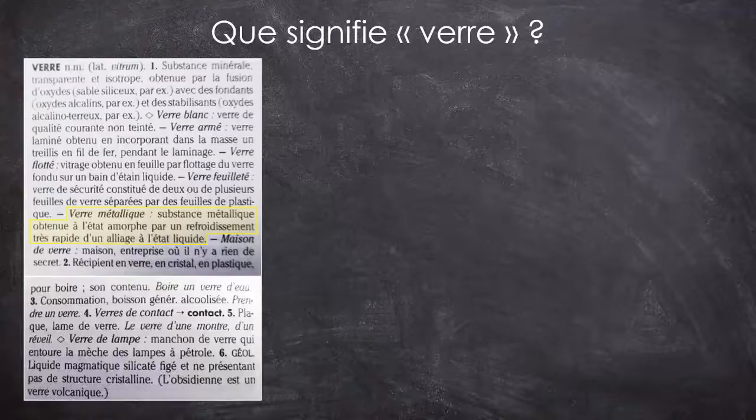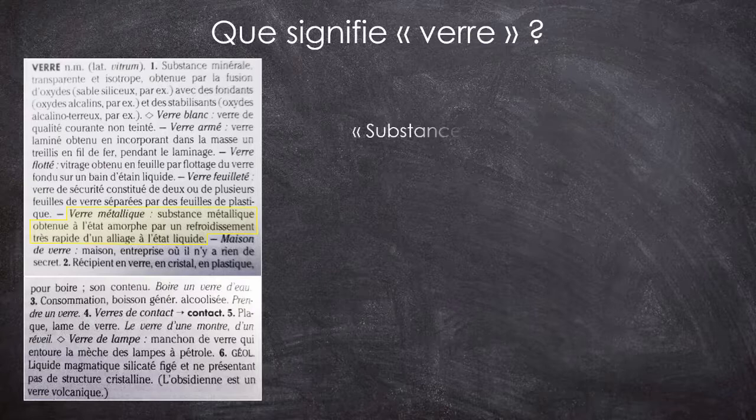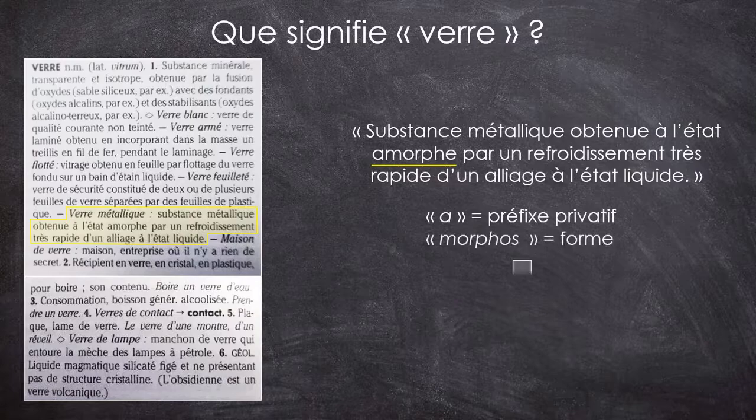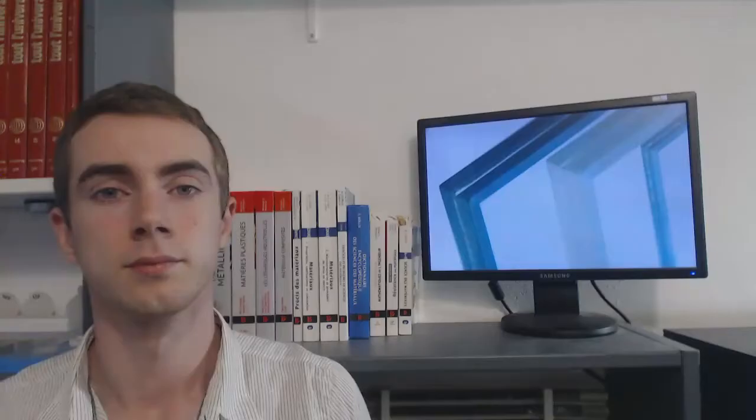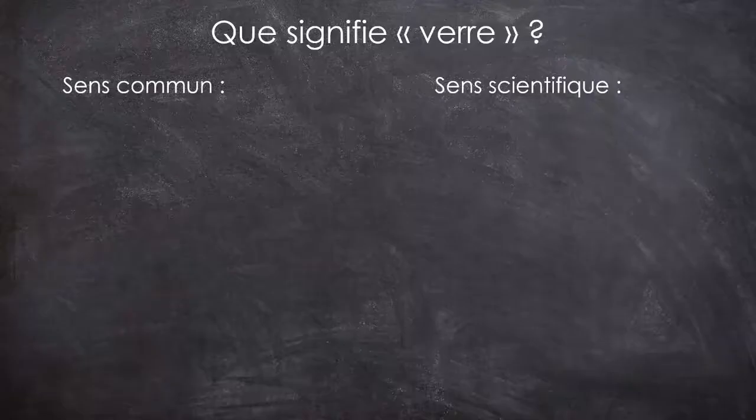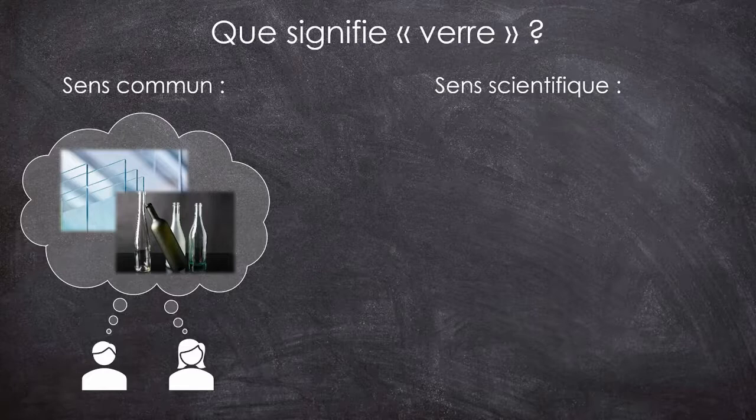Du coup, voyons voir ce qu'ils en disent. Un verre métallique serait une substance métallique obtenue à l'état amorphe par un refroidissement très rapide d'un alliage à l'état liquide. On a là un terme très important qui apparaît : amorphe, qui vient du grec et qui signifie sans forme. Cette définition des verres métalliques me permet de mettre en exergue la différence profonde qui existe entre le sens commun et le sens scientifique du terme verre. Dans le langage commun, le verre, on l'a vu, c'est le matériau des vitres et des bouteilles. Scientifiquement, verre est un terme plus global qui reste aujourd'hui difficile à définir avec précision, bien qu'on maîtrise ces matériaux depuis des millénaires. Ce terme peut s'appliquer à toutes les familles de matériaux.